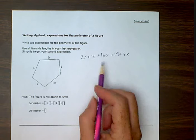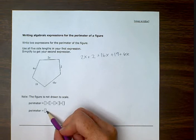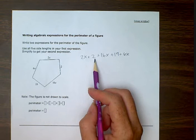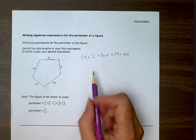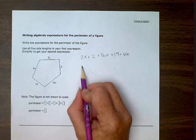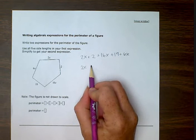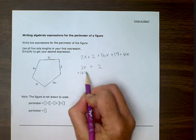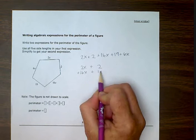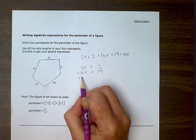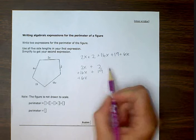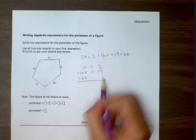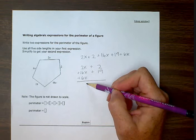So when we want to get to the simplified answer, we're going to combine all the x terms and all the number terms. So I'm going to rewrite this: 2x plus 2 plus 16x plus 19 plus 6x. So I wrote all the x terms in one column and all the number terms in the other column. And now I'm going to add down this column and down this column.